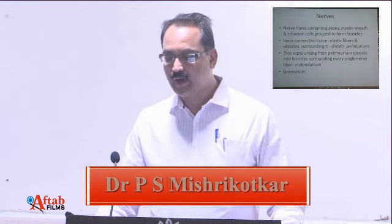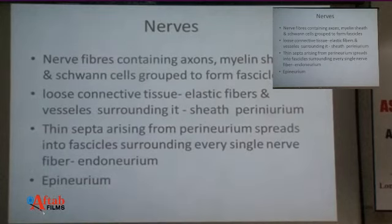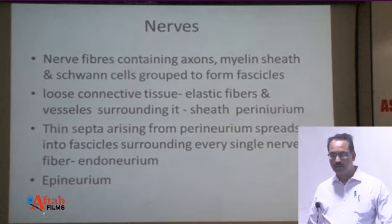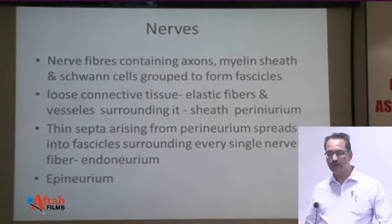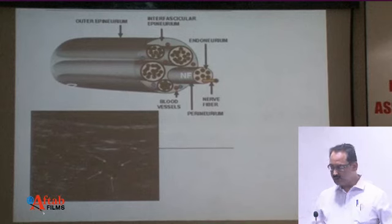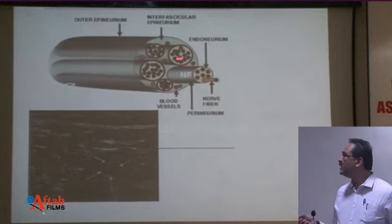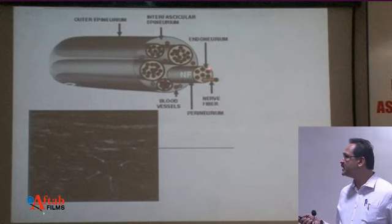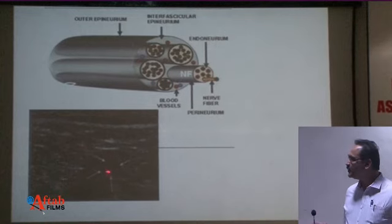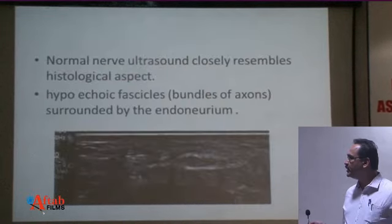The nerve fibers containing axons, myelin sheath, and Schwann cells are grouped together to form fascicles. Loose connective tissue like elastic fibers and vessels surround them — this is called the perineurium. Thin septa arising from the perineurium spread into the fascicles surrounding every single nerve fiber, called the endoneurium. All these are bundled by an outer covering called the epineurium.